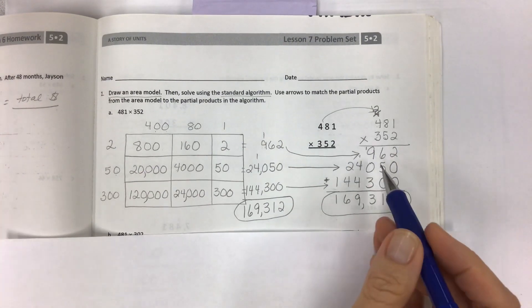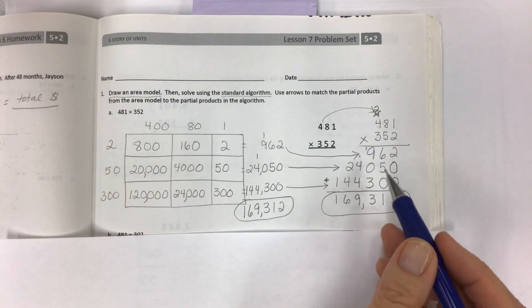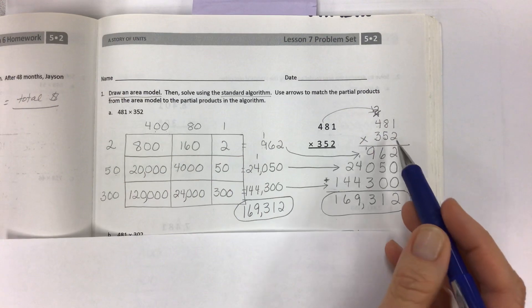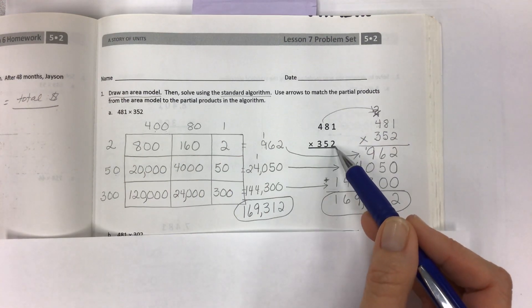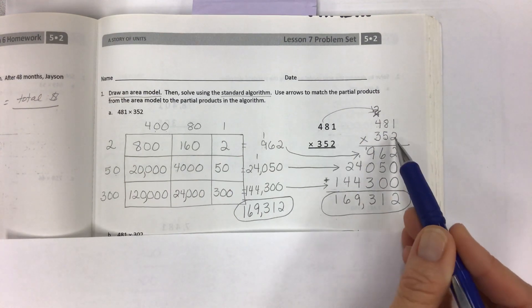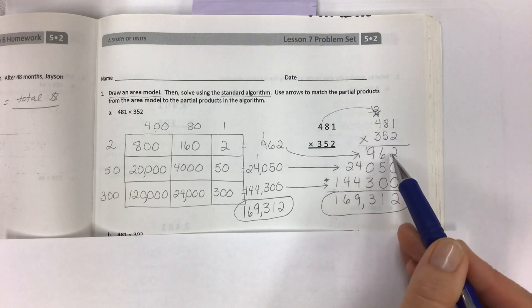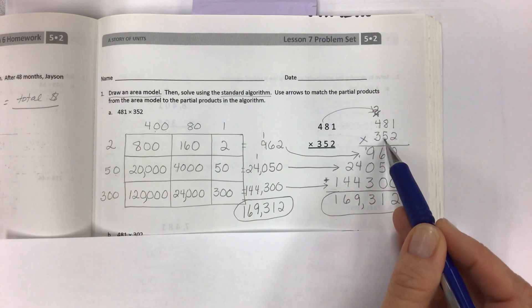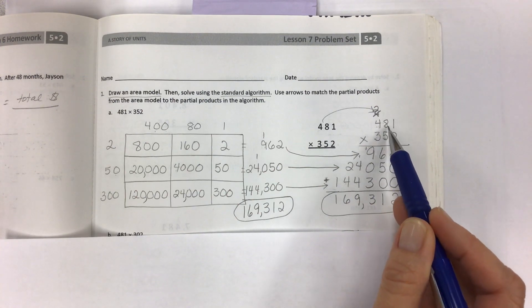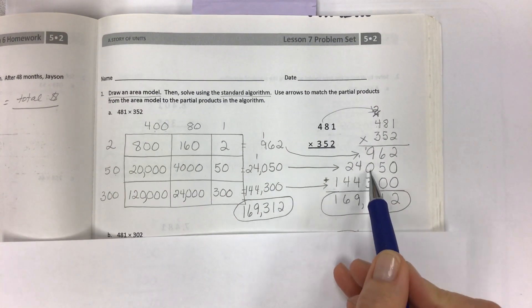So we have our partial products here in the box for every position. And then in the standard algorithm you take your ones and this is the ones place, two ones times 481 is 962. And then five tens or 50 times 481 is 24,050.